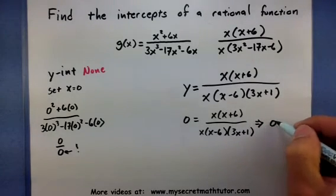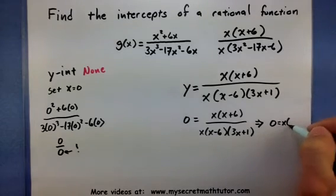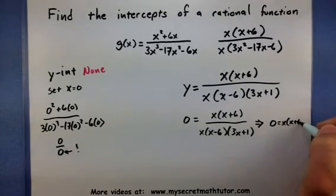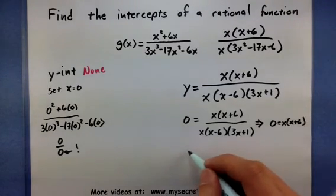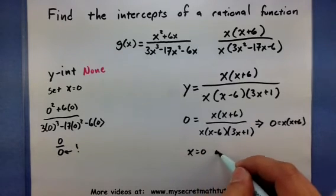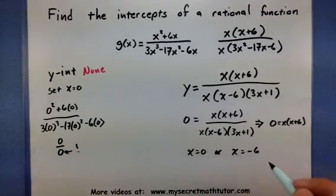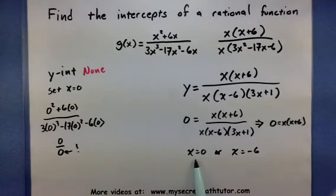Well the top will equal 0 when x is equal to 0 or x equals negative 6. But as we've seen we've had problems when x is equal to 0. That causes us to divide by zero. So let's get rid of that one.